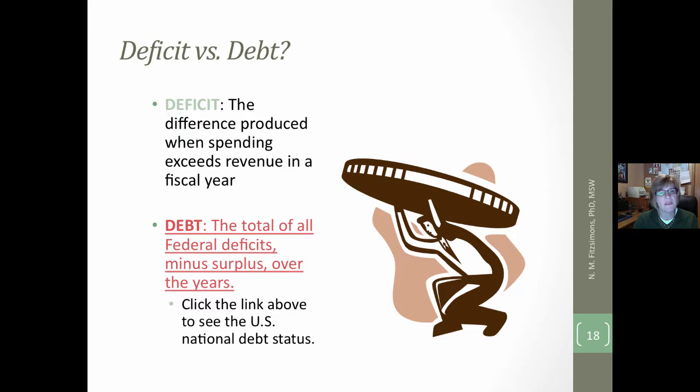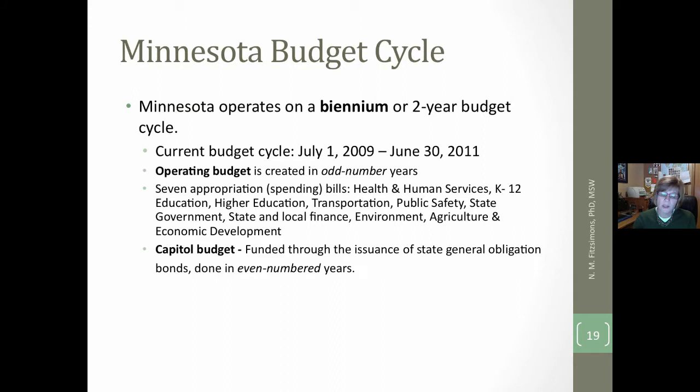A reminder about deficit and debt: state governments cannot have a deficit and cannot carry a debt. A deficit is the difference between the revenue that is generated and what is spent. The debt is the total of all federal deficits over the years, minus any surplus. We do have a deficit, and we carry a substantial debt.